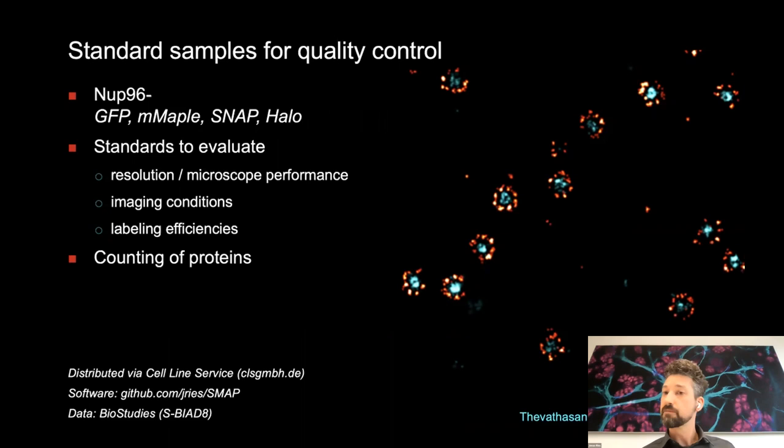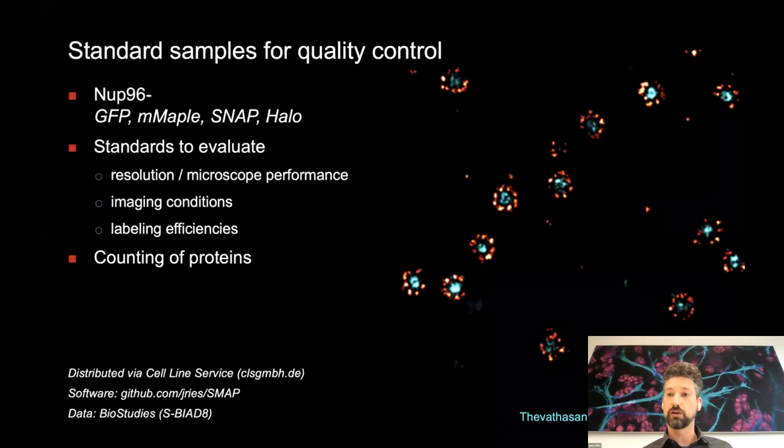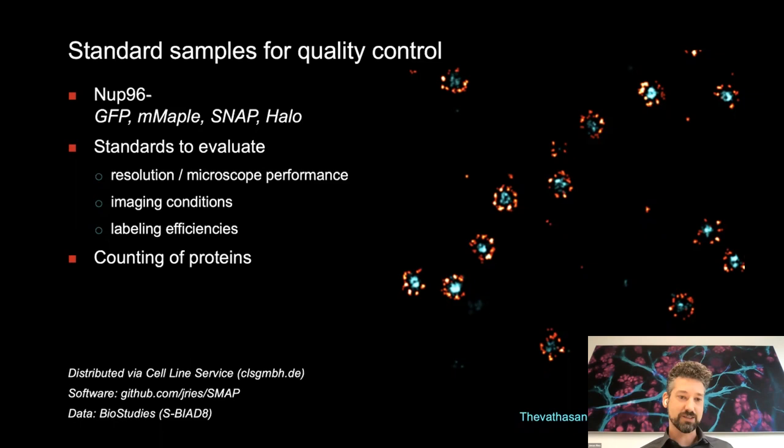To summarize, we generated cell lines where Nup96 is labeled with commonly used super-resolution microscopy labels, showing they are quite useful to optimize microscopy conditions including labeling efficiencies and to count the number of proteins. These cell lines are now shared with many groups worldwide and are already becoming the gold standard for quality control in super-resolution microscopy. You can order these cell lines — we outsourced the distribution because doing it ourselves was too much work.